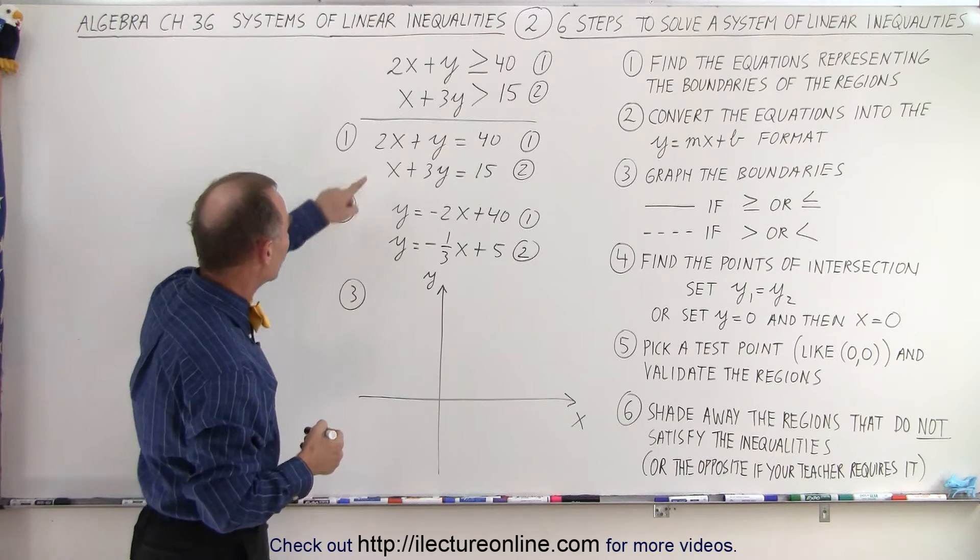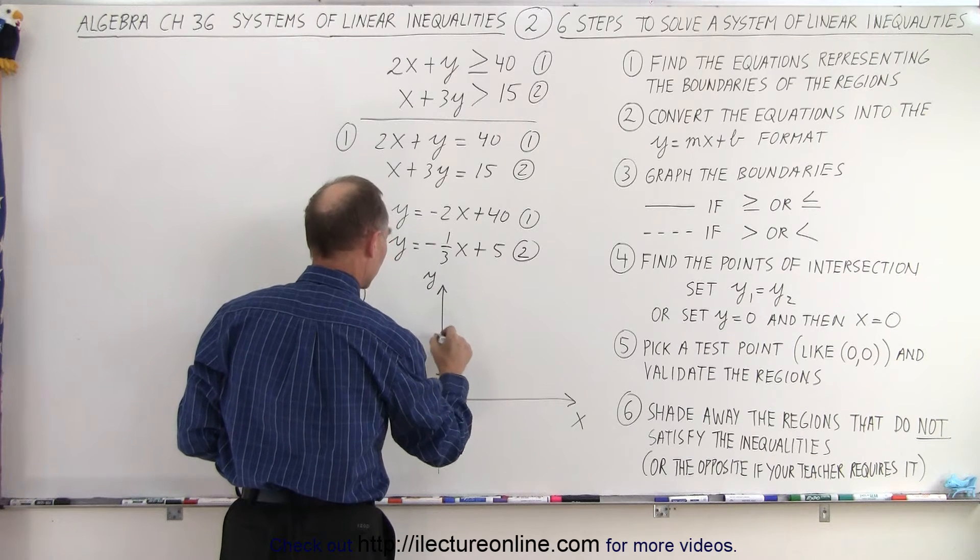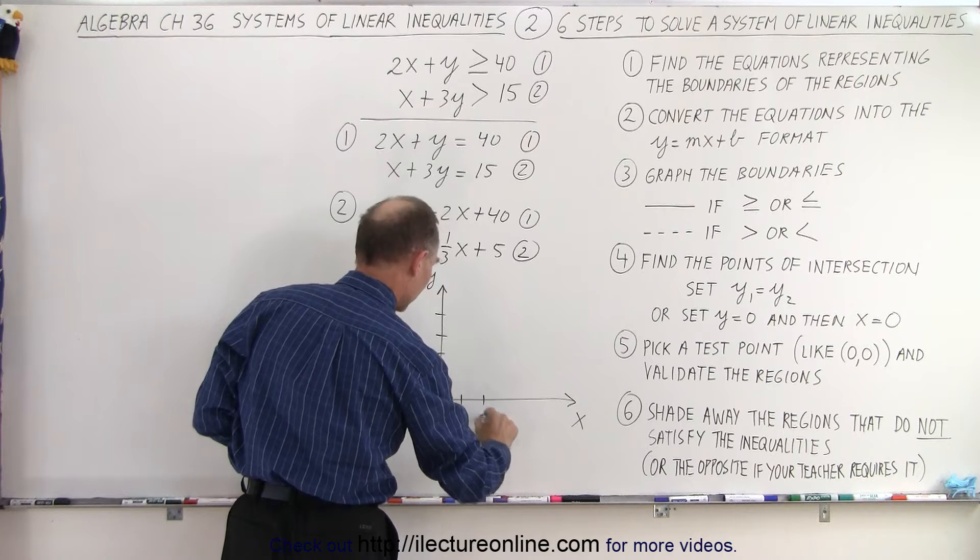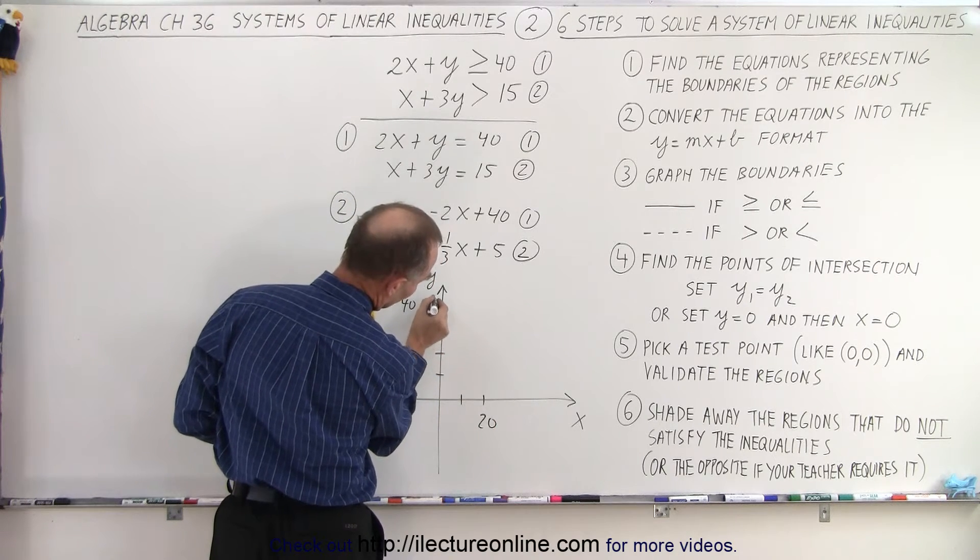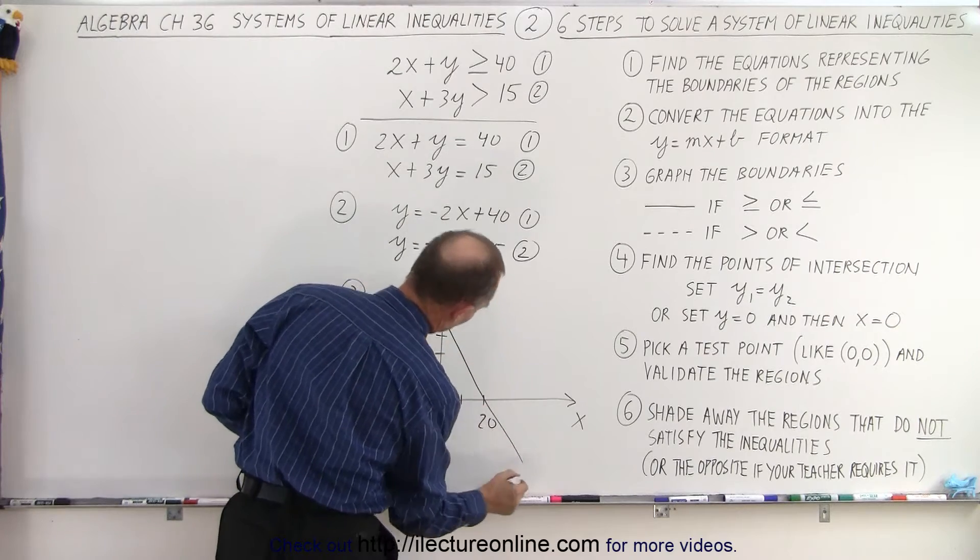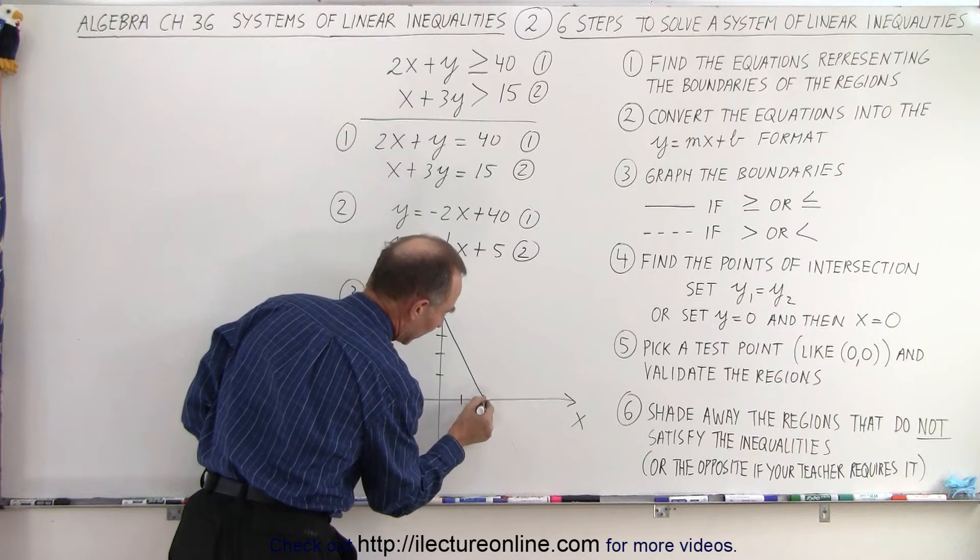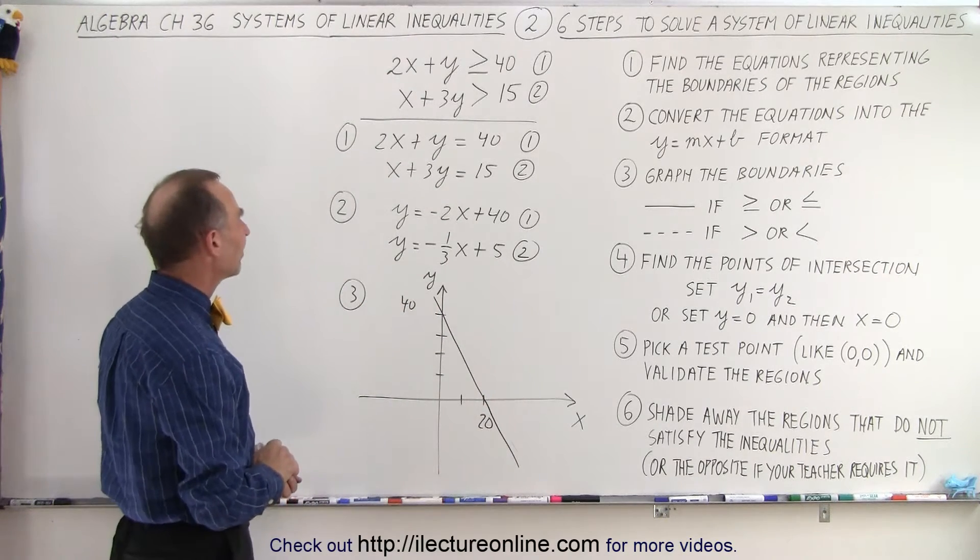Okay, let's graph the first one. y equals negative 2x plus 40. So 10, 20, 30, 40. Negative 2, 10, 20. So the line goes from this point to this point. So let's try to draw a straight line like this. There we go. There's our first line. Of course, I tried to avoid hitting the 20 and that kind of messed me up. There we go.